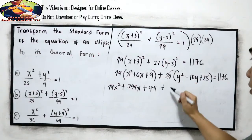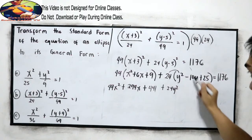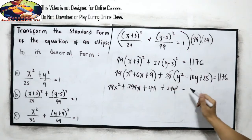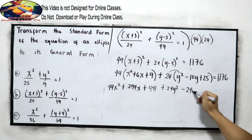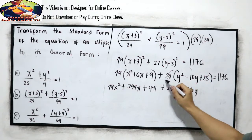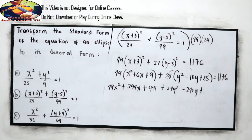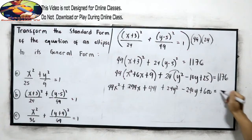Plus, distribute 24y squared, minus 24 times negative 10, 240y, then 24 times 25, that is 600, is equal to 1,176.